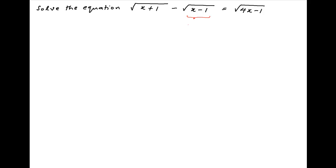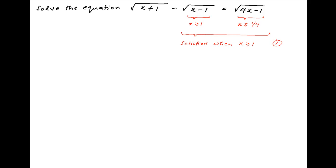The second term on the left-hand side of the given equation is defined when x is greater than or equal to 1, and the right-hand side is defined when x is greater than or equal to 1/4. Both of these conditions are satisfied when x is greater than or equal to 1. Let's call this condition 1. Note that when this condition is satisfied, the first term on the left-hand side is also defined.